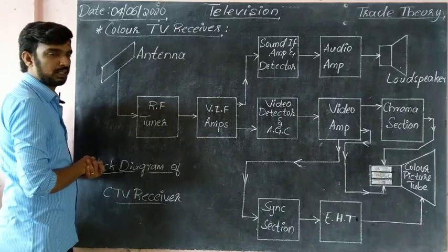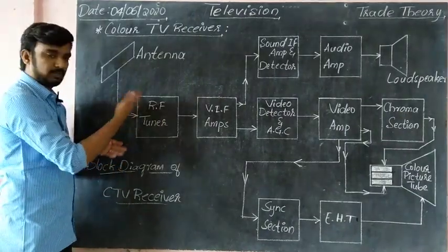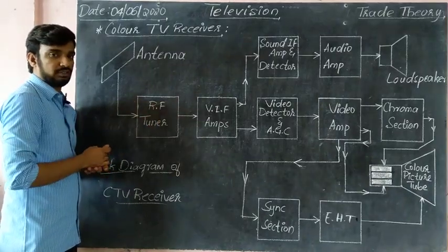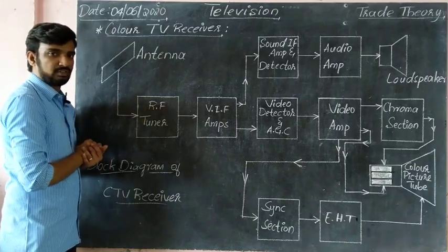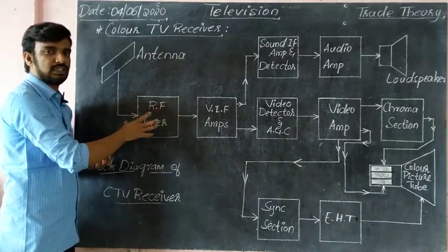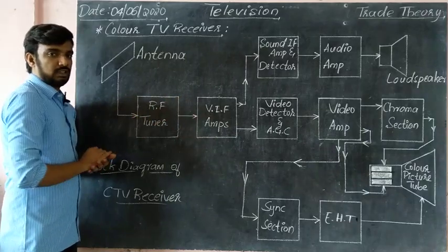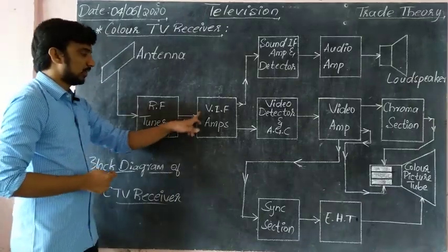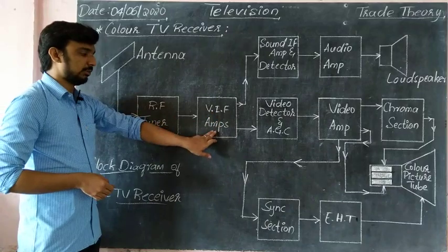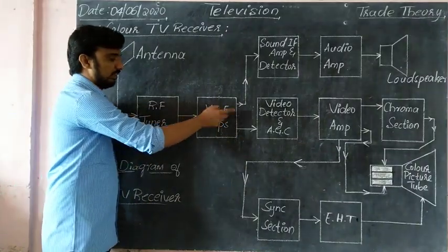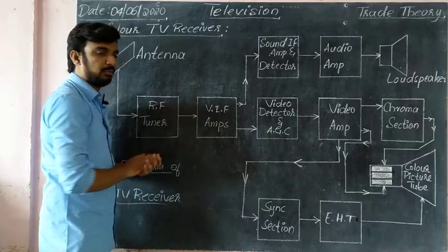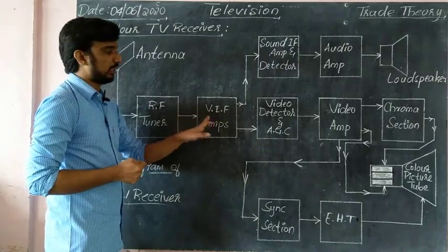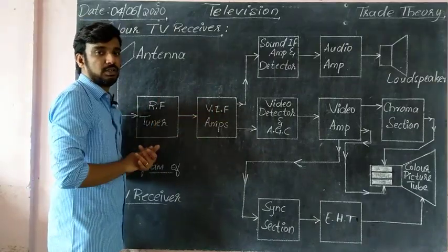From that channel, we tune to a particular IF. The IF output is connected, and if you receive the output of the RF tuner, it continues at the same frequency. Then the intermediate frequency is fed to the video intermediate frequency amplifier. In the video IF amplifier section, the video amplifier is separate and the sound amplifier is separate.